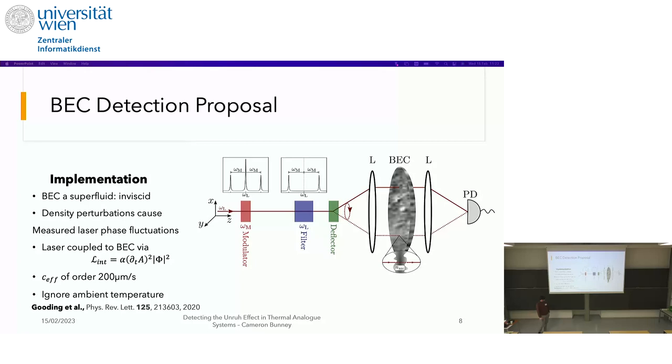These are the analog quantum fields that we want to look into. So by studying these density perturbations, we can extract hopefully information about this acceleration dependence. But the way we get that is when the laser passes through, these density perturbations will cause phase changes or phase fluctuations in the laser. And the reason we introduce two side bands is they're oppositely detuned so that their phase fluctuations will be in opposite directions so you can increase the sensitivity of your system.